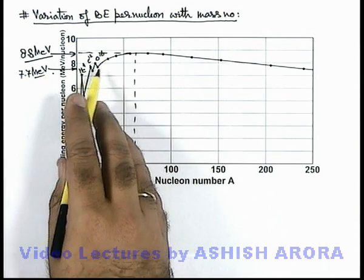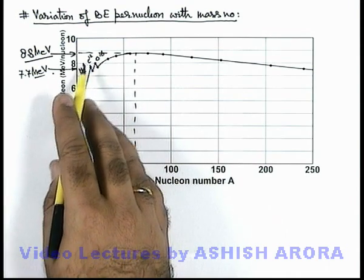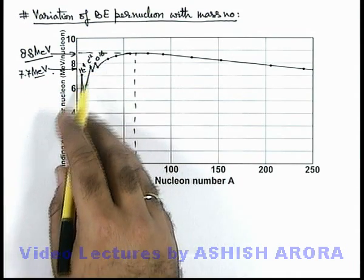So here, by observation we see these elements helium, carbon, and oxygen are more stable nuclei compared to their neighboring elements.